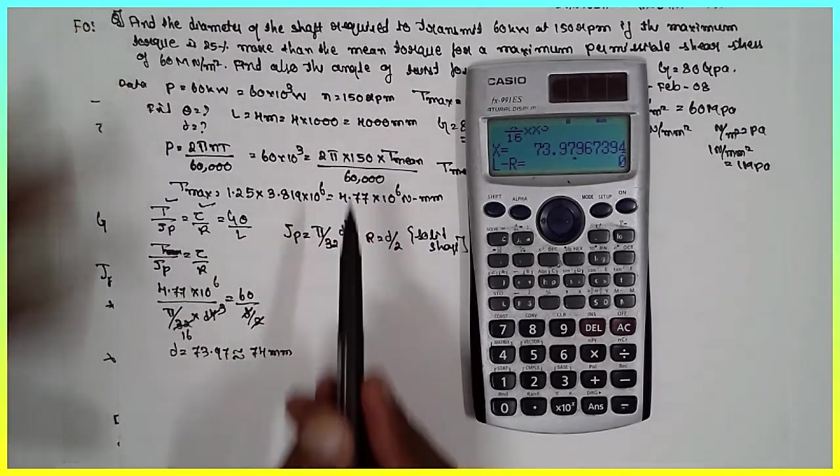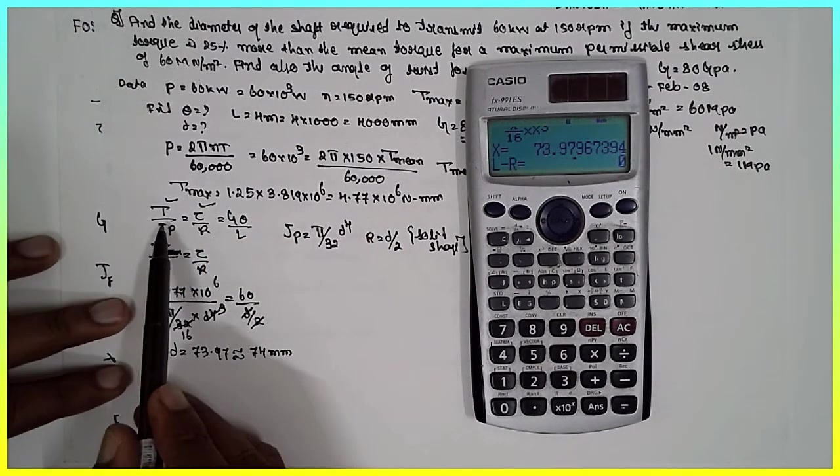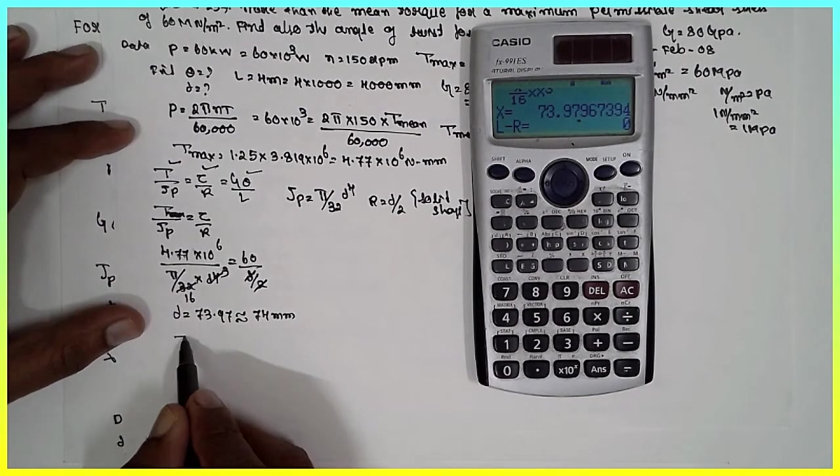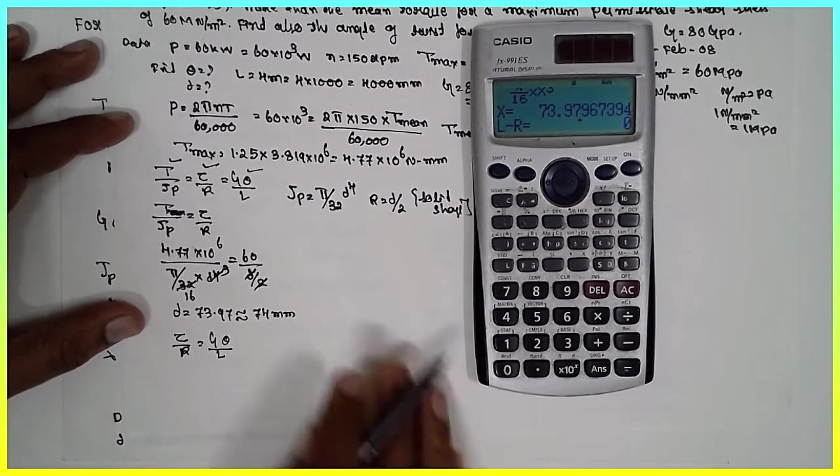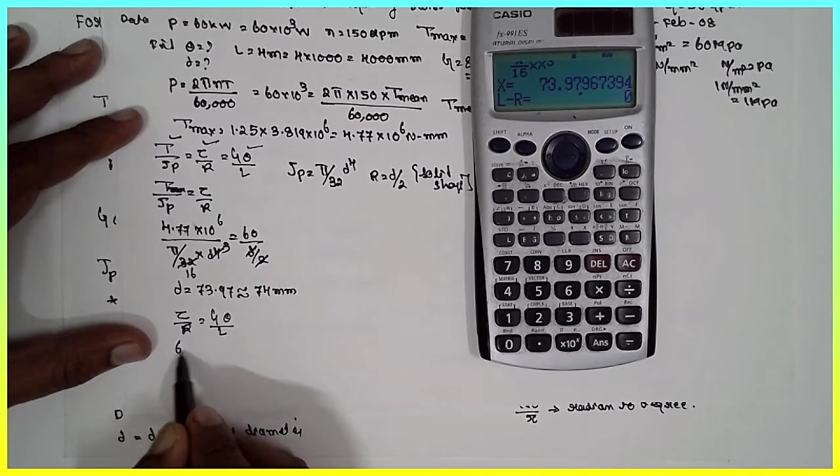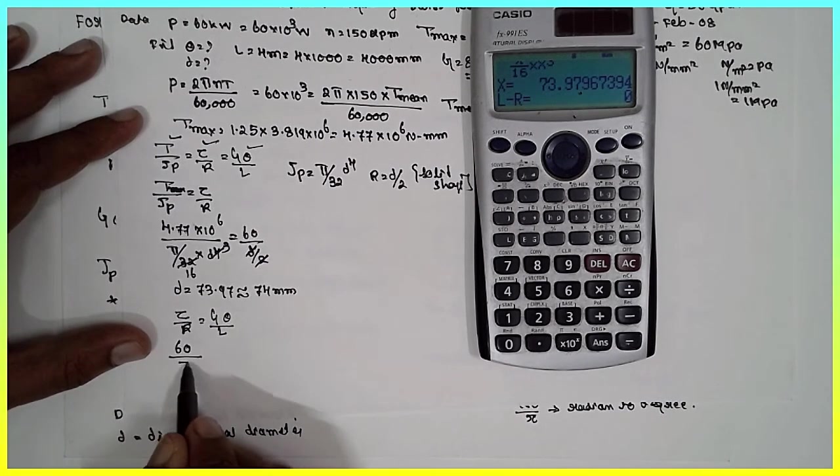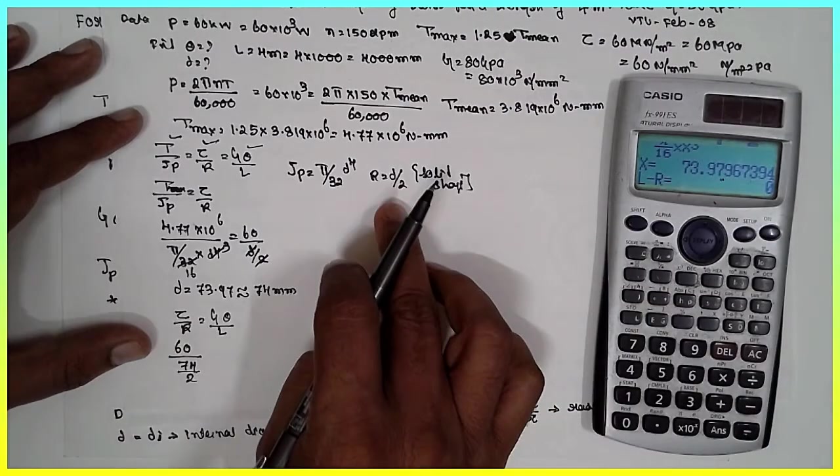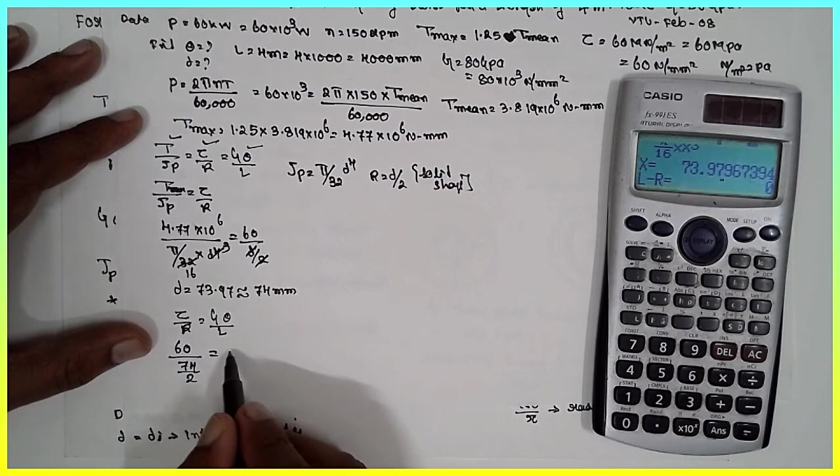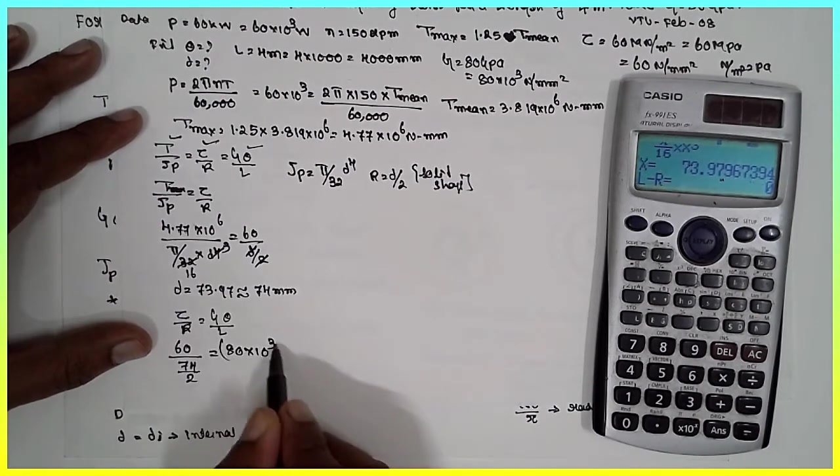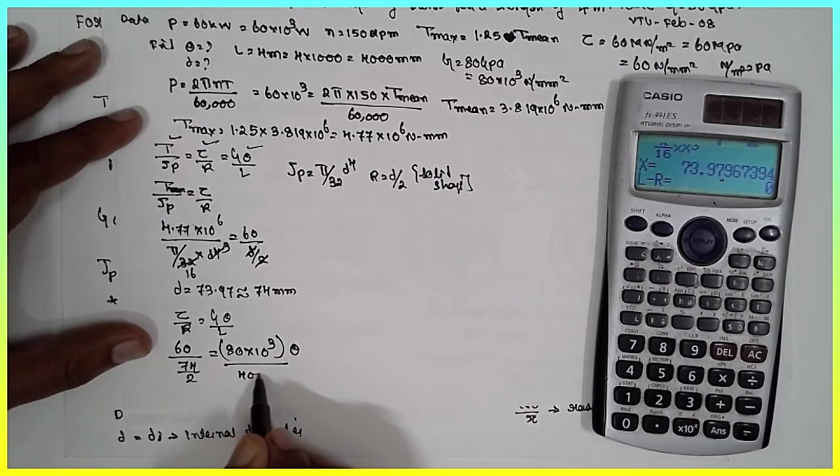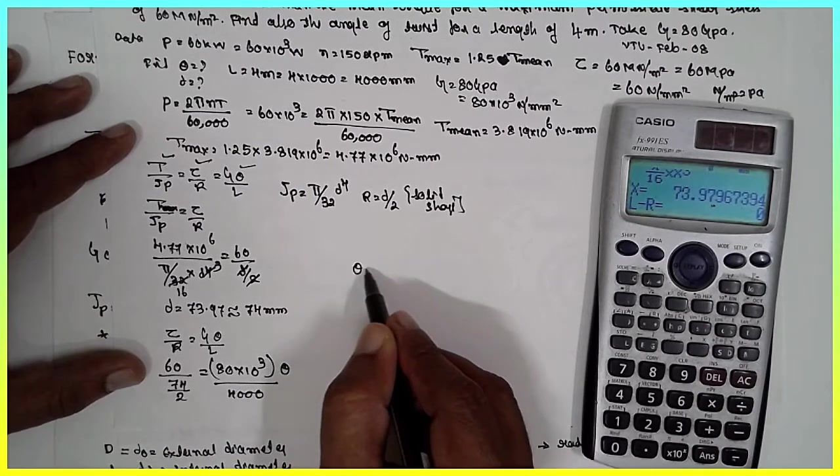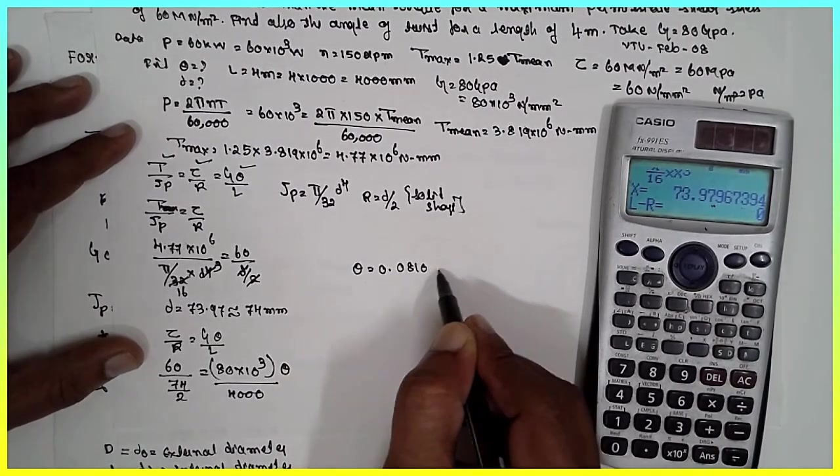Now, after getting the diameter we have to find out the angle of twist. Tau divided by R equals G theta by L. The tau is given here, 60. R is diameter 74 divided by 2, because R is nothing but d by 2. G value is 80 times 10 raised to 3. Unknown is theta. Length is 4000. Cross multiply, you will obtain theta equals 0.0810 radian.